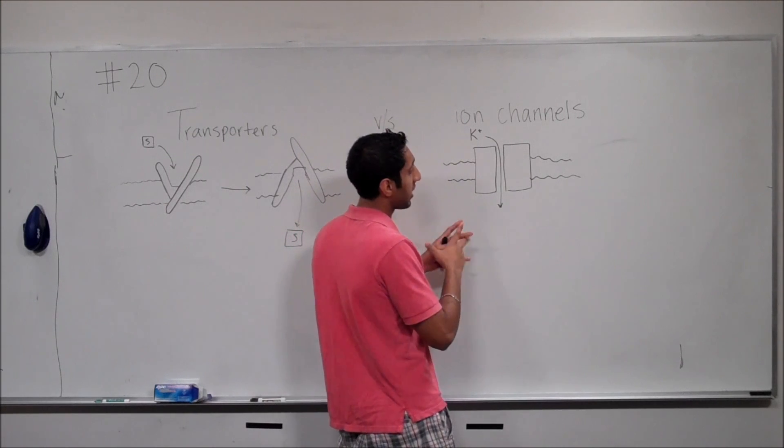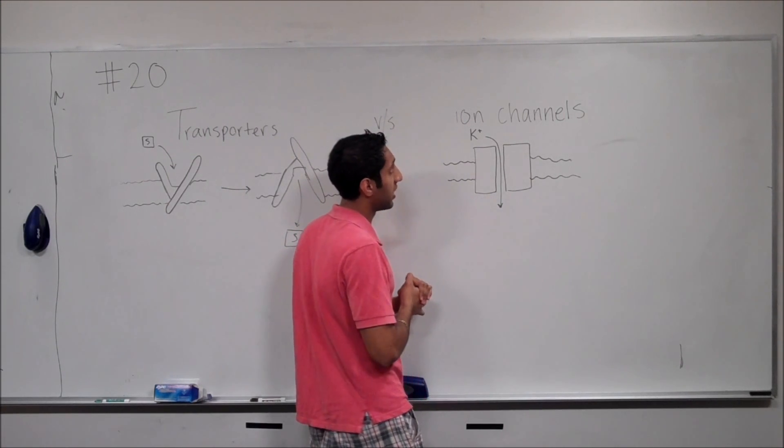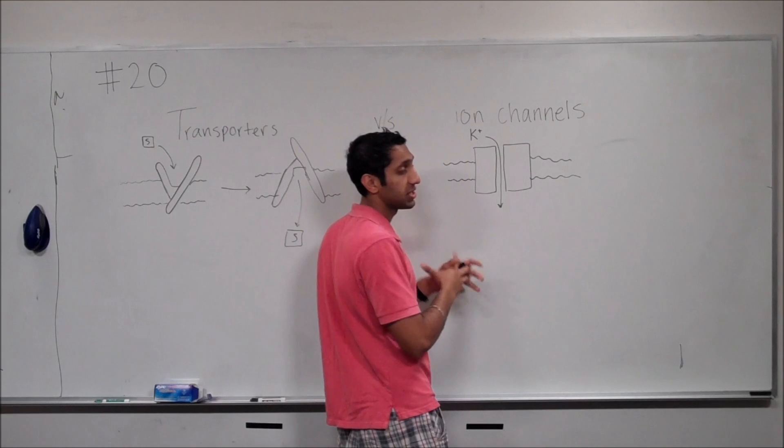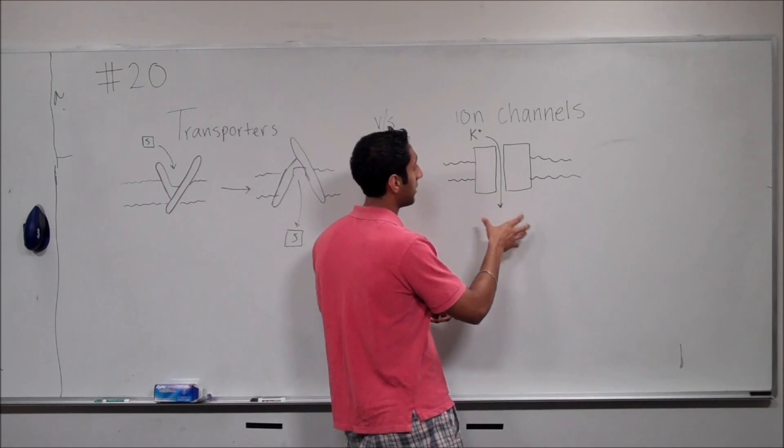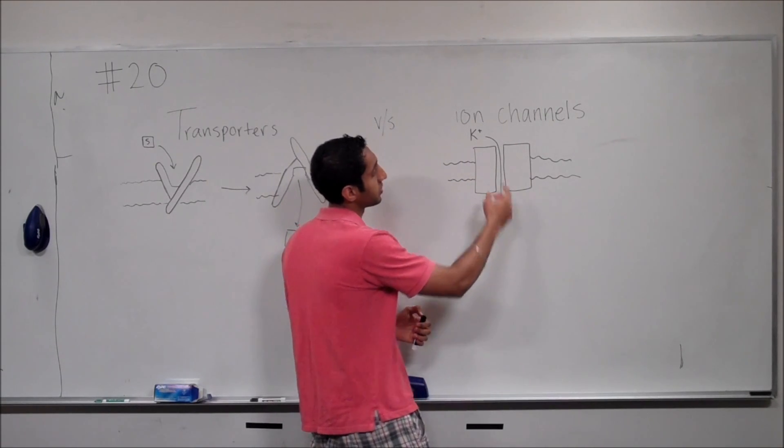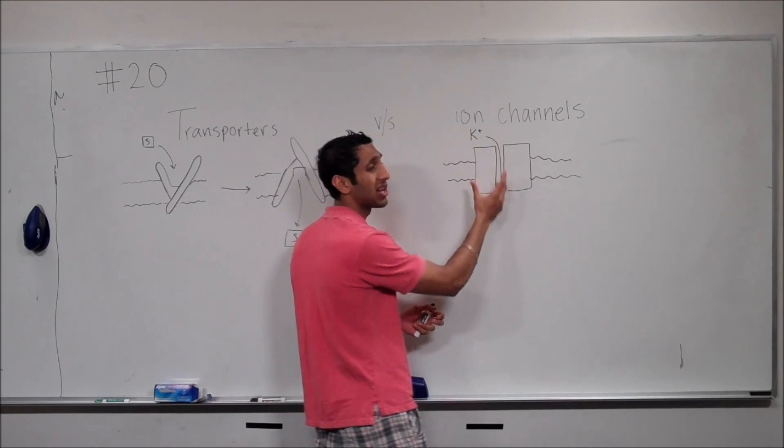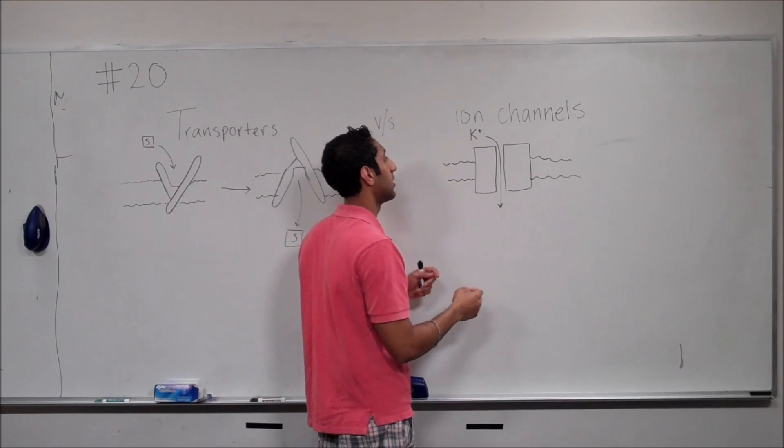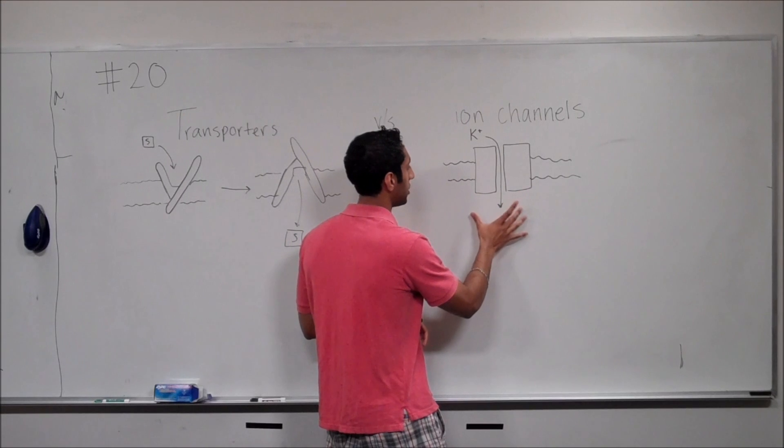And generally, you can have a variety of shapes for ion channels. You can have voltage-gated channels or free channels. In this case, I've drawn a free channel in which a potassium just goes through a hollow point in the channel itself.